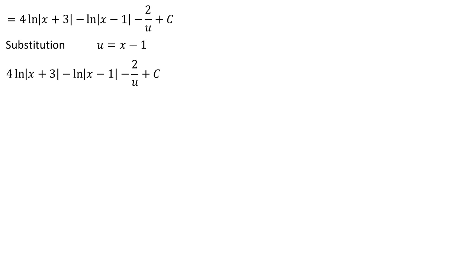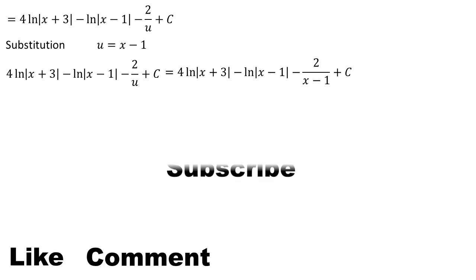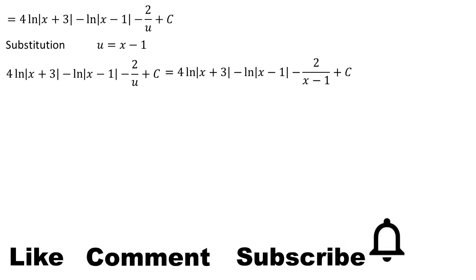The final answer is 4·ln|x + 3| minus ln|x - 1| minus 2/(x - 1) + C. Finally, we have found the answer to this question. Don't forget to like, comment, subscribe, and turn on the notification bell. Thank you, see you next time.